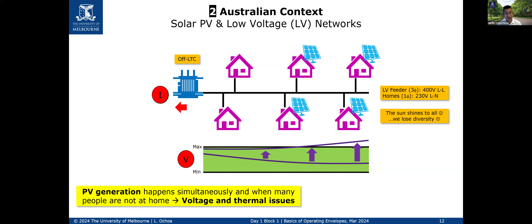Reverse power flows that our assets can generally handle, but if there are a lot, we end up with higher voltages and much higher currents — so much that voltages can go beyond the upper statutory limit, which here in Australia is 253 volts. With a lot of reverse power flows, you can also have power flows that exceed the rated capacity of your conductors or transformers. These are the voltage and thermal issues.